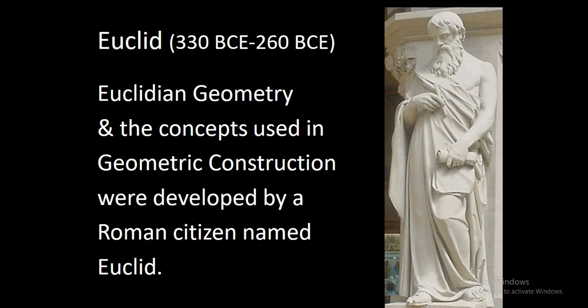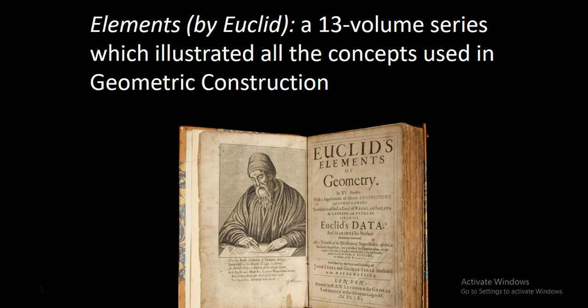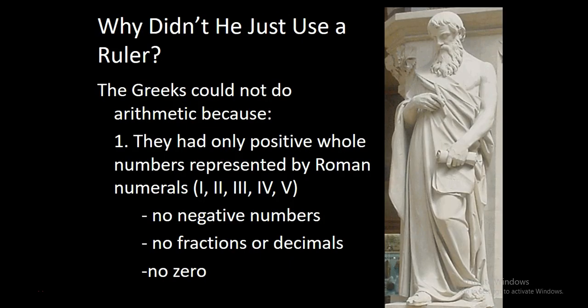Euclid was one of the guys that came up and wrote down a whole bunch of precepts about geometry and geometric construction. He was also the author of a 13-volume series of books that laid out the principles of Euclidean geometry and geometric construction.